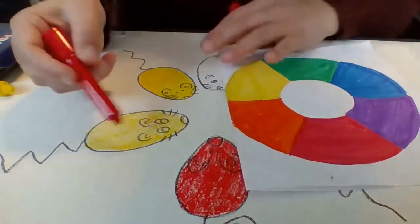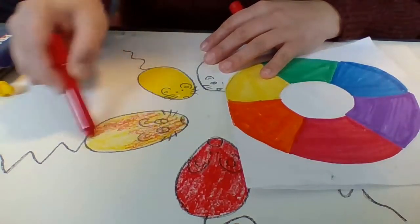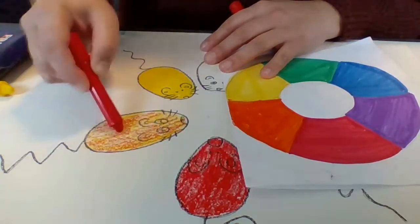Then I'll get my red, and I'll add a little bit on top. You'll see some orange already starting to mix together.